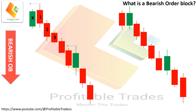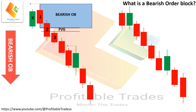Take candle one, candle two, and candle three. In order to find a bearish fair value gap, there must be a gap or price difference between the low of candle one and the high of candle three. Draw the horizontal lines from the low of candle one and the high of candle three — there you see a price gap. Rule number one and rule number two are both applied. Now draw a bearish order block at candle one.